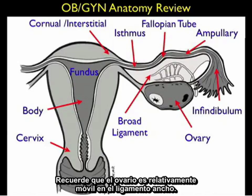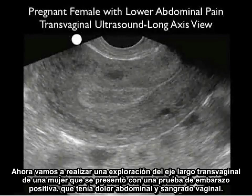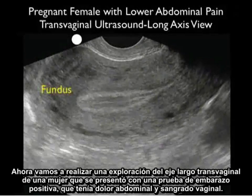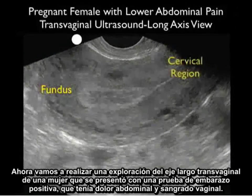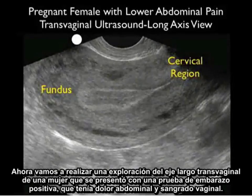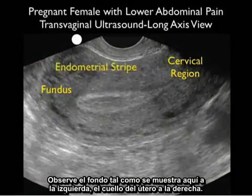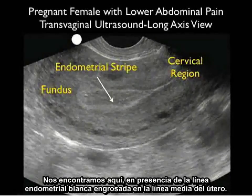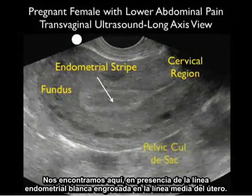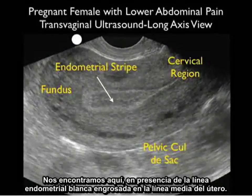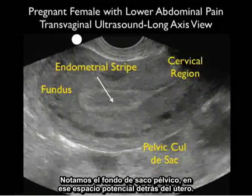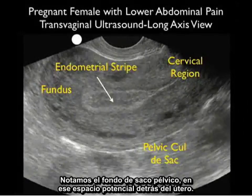Now let's review a transvaginal long axis scan from a woman who presented with a positive pregnancy test, lower abdominal pain, and vaginal bleeding. Notice the fundus shown here to the left, the cervix to the right. We see the presence of a thickened white endometrial stripe in the midline of the uterus. Notice the pelvic cul-de-sac — that potential space posterior to the uterus.